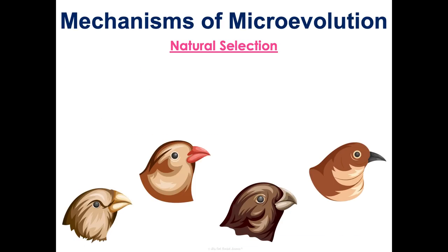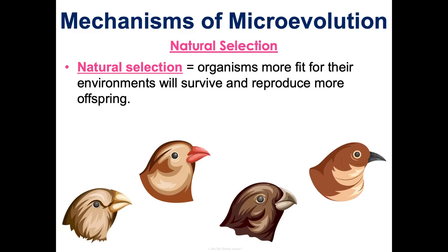Another mechanism of microevolution is natural selection, where organisms more fit for their environments will survive and reproduce more. They're going to have more offspring, so beneficial traits — which are adaptations — will become more common over time. Here's a picture of some of Darwin's finches, which had specific adaptations for their unique environments on the island they lived on. That provided a lot of evidence for natural selection: nature selected which organisms would live longer and reproduce more, and over time certain traits became more common in those populations.